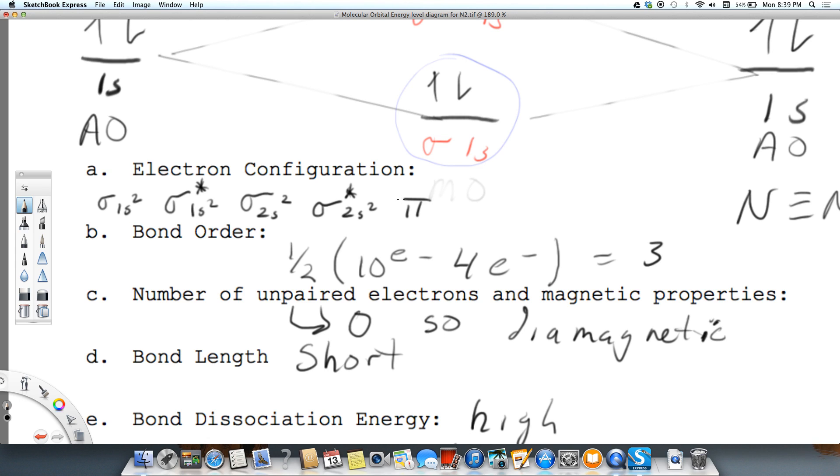we've got pi 2px2. And then we have pi 2py2. And then lastly, we have sigma 2pz2, and there's no antibonding on the pi.